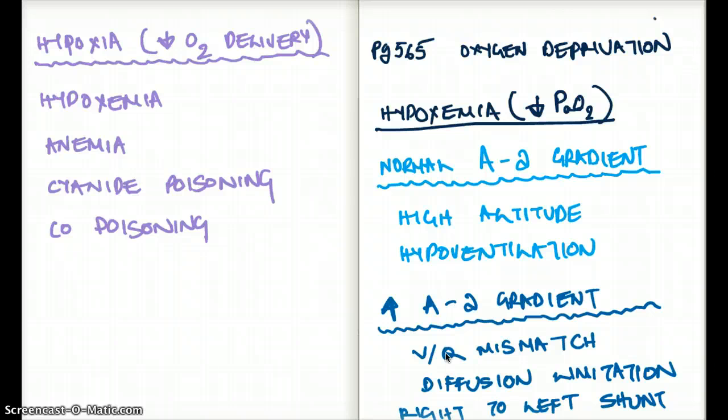Now, in the previous video, we did a question where, you know, there was, we had to calculate the alveolar gas tension, and in the alveolus, the oxygen was, you know, much higher than the arterial,